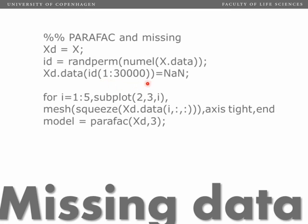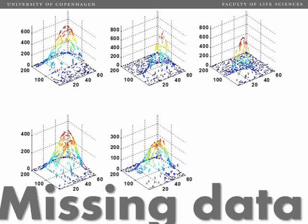We randomly assign a missing value, which is NaN in MATLAB (not a number), to 30,000 of the approximately 60,000 elements in our amino acid data. So about 50% of the data is going to be missing, and we can try and fit a PARAFAC model to that. Here's the data with 50% missing, all five samples shown, and you can see there's quite a lot of missing data points.